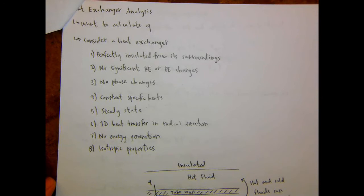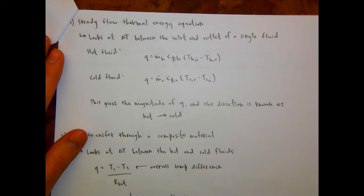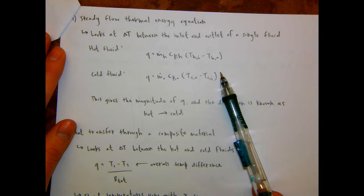We started talking through heat exchanger analysis and went through two different ways to calculate the heat transfer rate out of the hot fluid and into the cold fluid. The first way was using the steady flow thermal energy equation. For an idealized heat exchanger, given our assumptions, the heat transfer rate out of the hot fluid and into the cold fluid would be equal, and these two Q values should be the same assuming all of our assumptions are true.